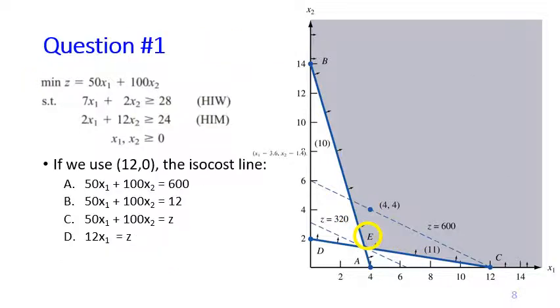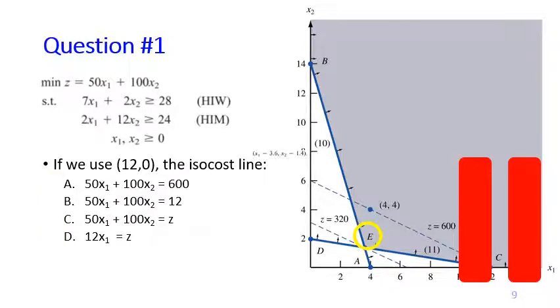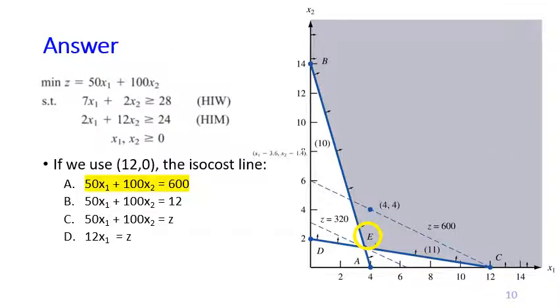So here are the questions to check your understanding. I will give you the answer after the pause of the video. If we use 12,0 as the feasible point to create an ISO cost line, which one of these four options is the correct ISO cost line? The answer is A because if you plug in 12,0 to this equation, you will get Z equals 600.